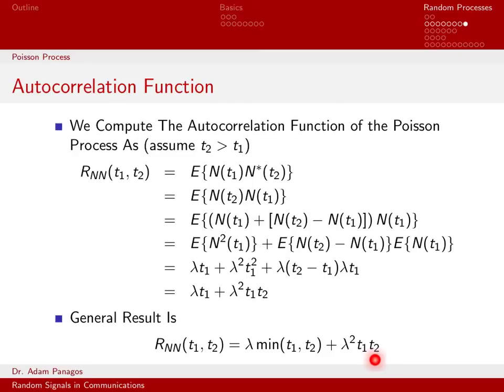That wraps up our discussion of the Poisson random process. We now know what it looks like, what its mean function is, what its variance function is, and what its autocorrelation function is. We know it has the independent increments property, which it essentially inherits from the exponential random variables used to construct the process, and that property is useful for these types of computations and other probability computations as well.